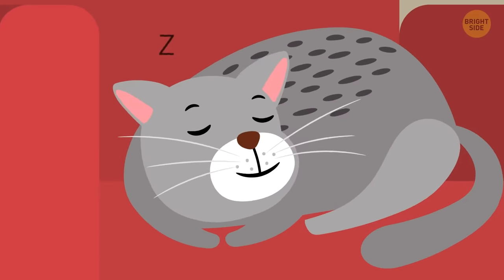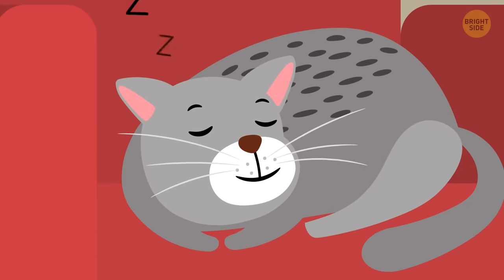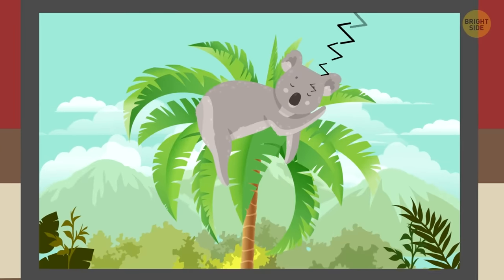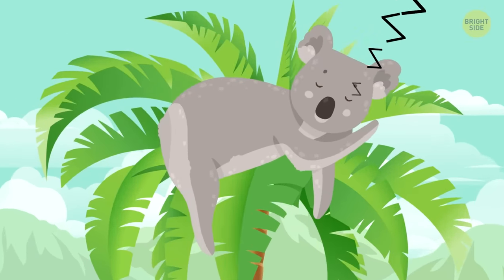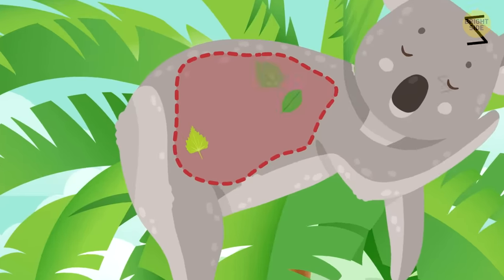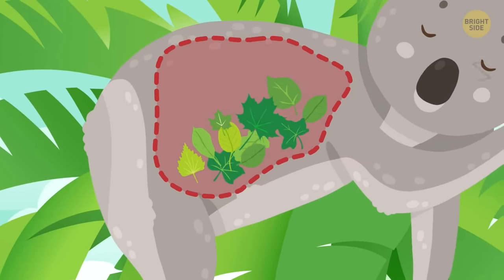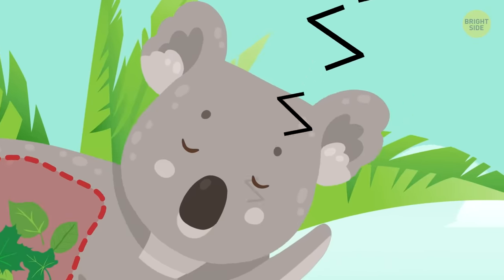If you think your cats love to catch some Zs, what will you say about koalas? These marsupials sleep from 18 to 22 hours a day. They spend a lot of energy digesting their high-fiber food, and napping is a great way to top this energy up.